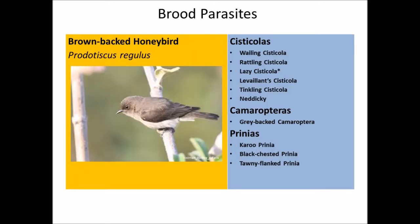Among the brood parasites, the Brown-backed Honeybird, Prodotiscus regulus, has a number of cisticolas as hosts — the wailing, rattling, lazy, tawny-flanked, and tinkling cisticolas — as well as the neddicky, which is also a cisticola species. Additional hosts are the grey-backed camaroptera and prinias: the Karoo prinia, black-chested prinia, and tawny-flanked prinia.